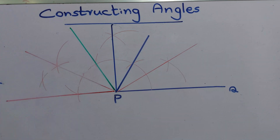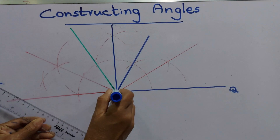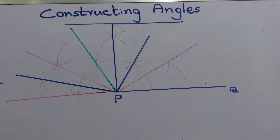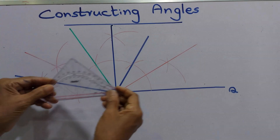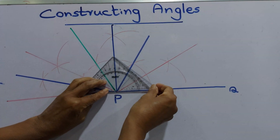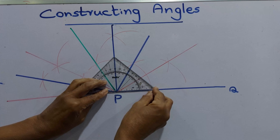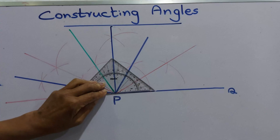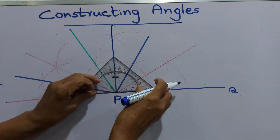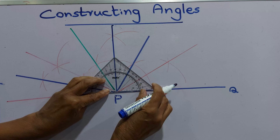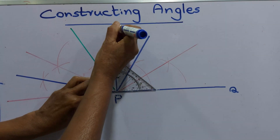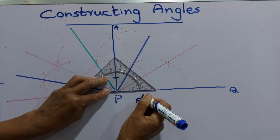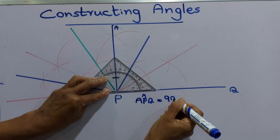From here we can join those two points — from here to here. Now we can use the protractor and measure the angles. You can construct angles using the compass. Now we can measure — keep the protractor on the horizontal line, then we can measure the angles.